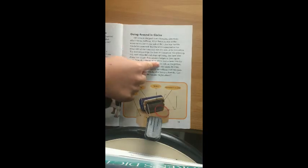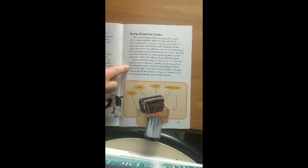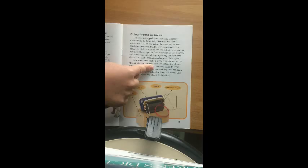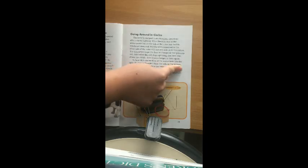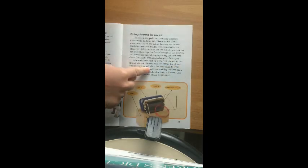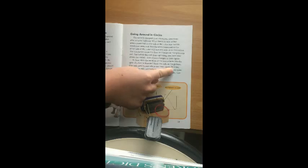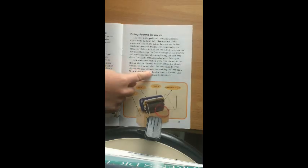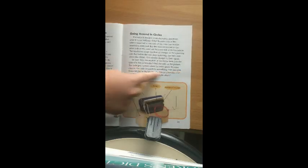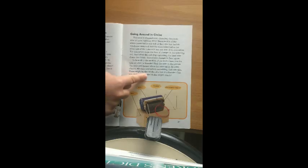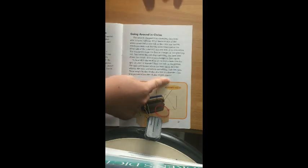So how does the motion of the motor turn into the spin of a fan or blender? Find the axle in the picture. The axle gets turned when the rotor spins. In some objects, the axle connects to something that can spin. These might be the blades of a fan or a blender. Can you picture where the blades might attach?